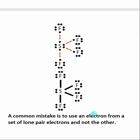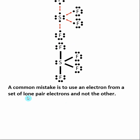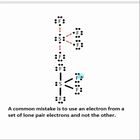What tells you that you've drawn SF4 correctly is the number of bonds and lone pair electrons on the central atom: SF4 has four bonds and one set of lone pair electrons. A very common mistake is using one electron from one lone pair and another electron from a different lone pair. This results in a structure with two unpaired electrons remaining, which is wrong — our Lewis structure should not have unpaired electrons. The rule is: if you use one electron as part of expanded valence, you must use the other one from the same pair.